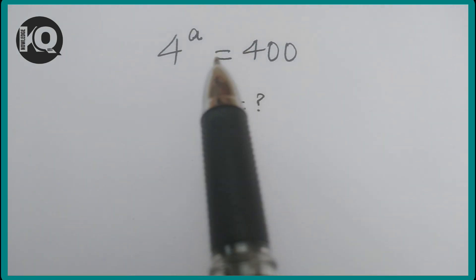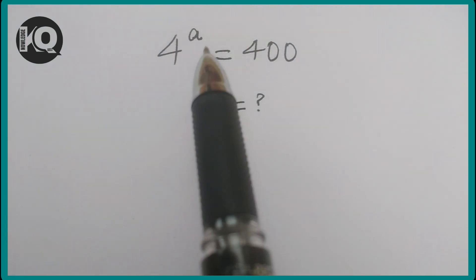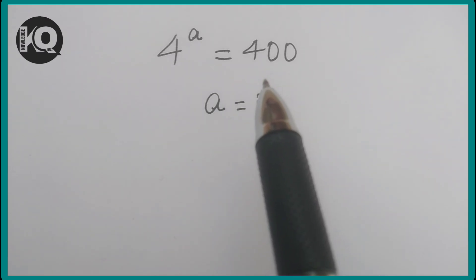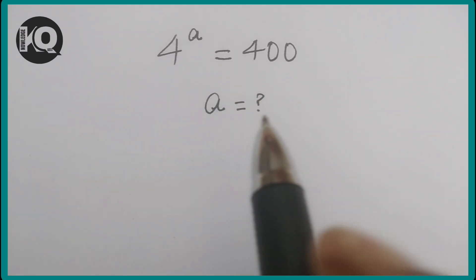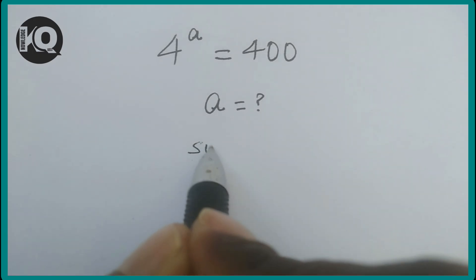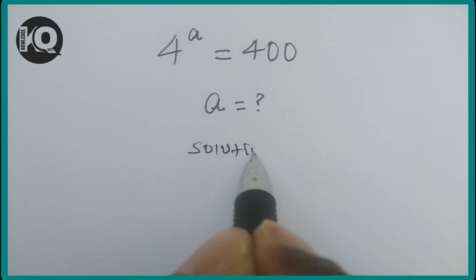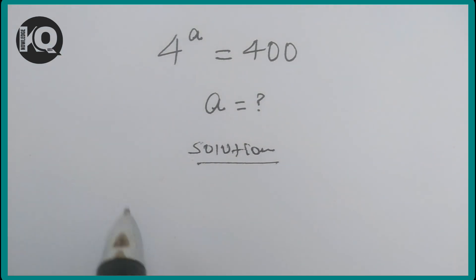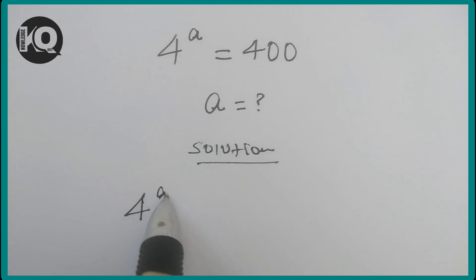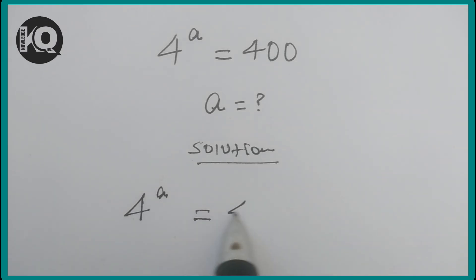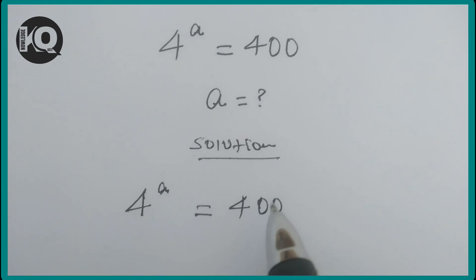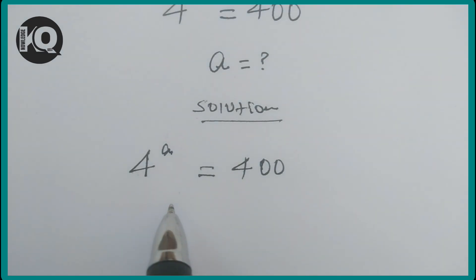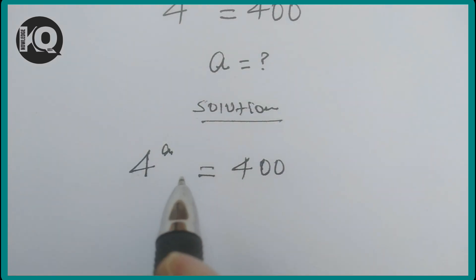Welcome. We will solve the problem 4 to the power of a equals 400, and find the value of a. This is an exponential equation, so it can be solved by introducing logarithm on both sides of the equation.